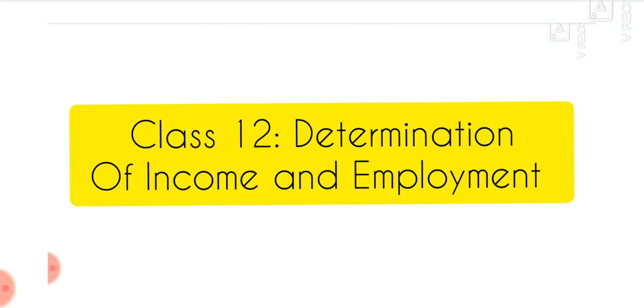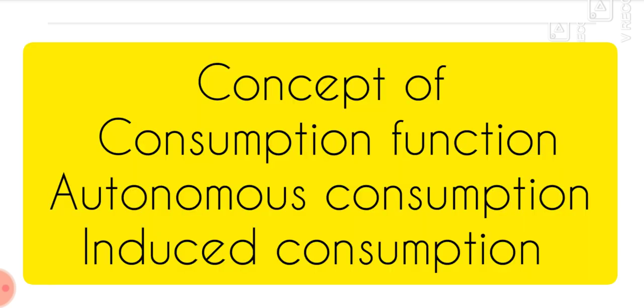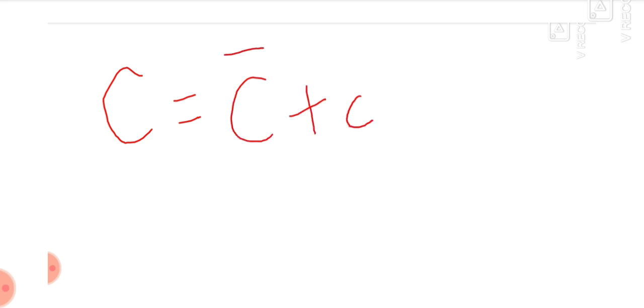Hello everyone. Today's video is for the students of Class 12, subject Economics, where they get the concept of autonomous consumption, induced consumption, and consumption function. First, let us see the consumption function: C = C̄ + cY. Capital C is consumption, C̄ is autonomous consumption, small c is MPC, and Y is income.